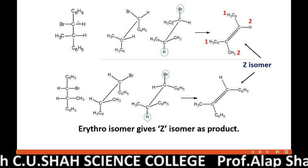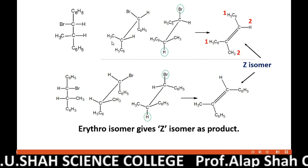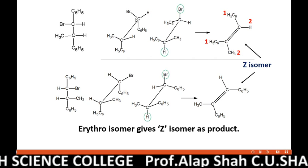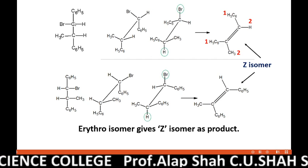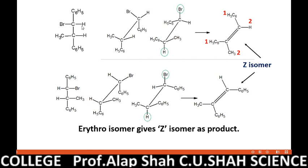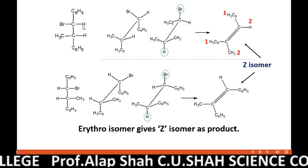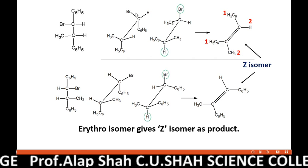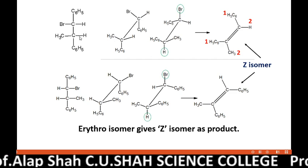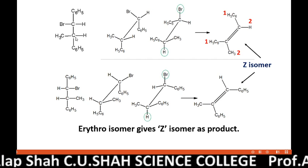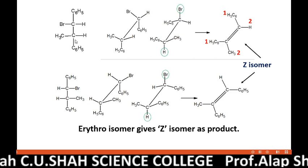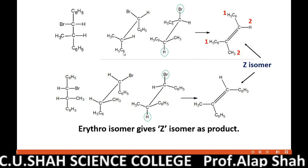This is the Fischer projection. Let us convert it to the Sawhorse projection. This carbon has a phenyl group written into the plane below. The two groups — bromine and hydrogen — attached with this carbon are written as left and right. The methyl is at the left side and hydrogen is at the right side of the second carbon, and similarly the phenyl group attached with this carbon is written accordingly.